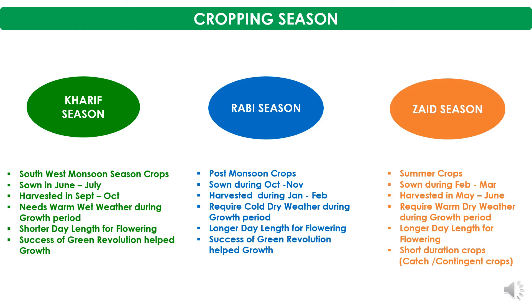Zaid crops require warm, dry weather during the growth period and longer day length for flowering. These crops are generally of short duration and are known as catch crops or contingent crops. Catch crops or contingent crops are cultivated to catch the forthcoming season — they replace the main crop that has failed due to biotic, climatic, or management hazards. Catch crops are generally of very short duration and quick-growing.